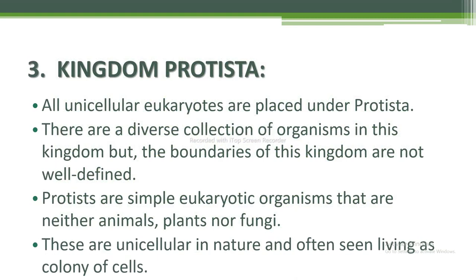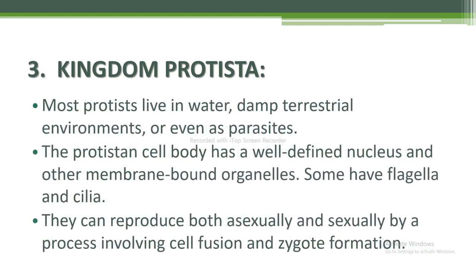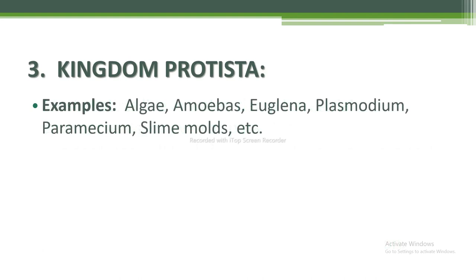Most Protists live in water, damp terrestrial environments, or as parasites. The Protist cell body has a well-defined nucleus and other membrane-bound organelles, and some have flagella and cilia. They can reproduce both asexually and sexually by a process involving cell fusion and zygote formation. Examples include algae, amoebas, euglena, plasmodium, paramecium, and slime molds.